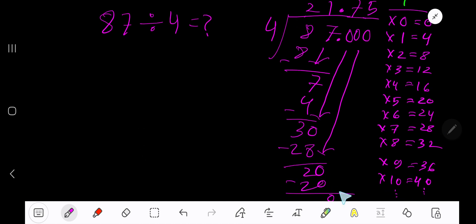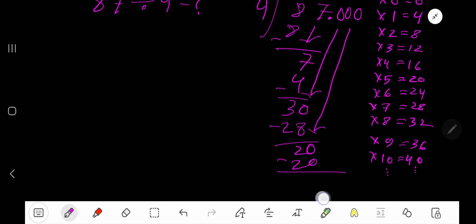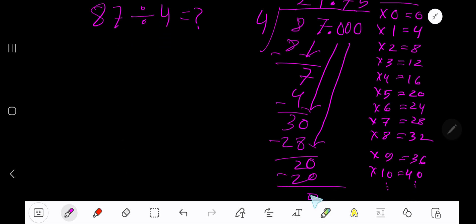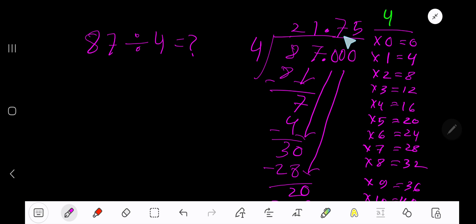Subtract and you are getting 0. As our remainder is 0, we are done. So our answer is 21.75. This is the quotient to answer.